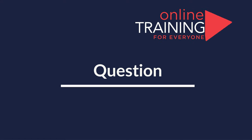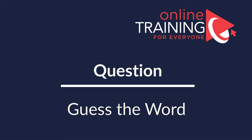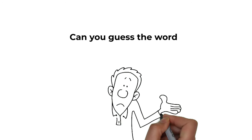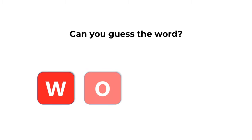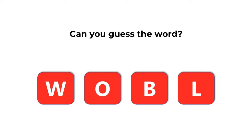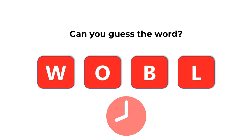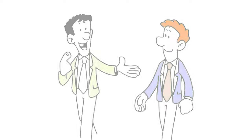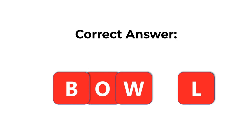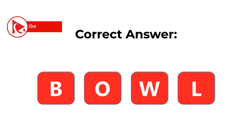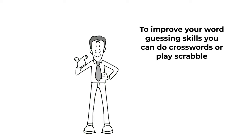Here's a cool question that you frequently see on the test. You're presented with four letters — W, O, B, and L — and need to guess the word using all of them. Give yourself 10 to 15 seconds. The correct answer is BOWL, spelled B, O, W, L.